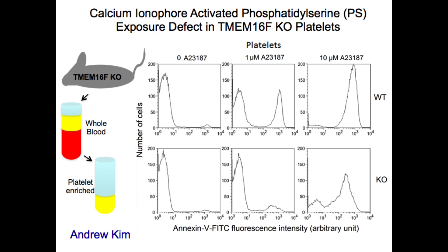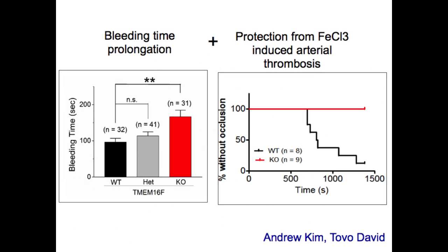We recently generated a TMEM16F knockout mouse, which mirrored many of the phenotypes associated with Scott syndrome patients. Platelets collected from knockout mice displayed attenuated PS exposure in response to elevated internal calcium compared to wild-type mice. The knockout mice also showed longer bleeding time compared to wild-type mice, again reflecting the human bleeding disorder. Furthermore, when we challenged them with ferric chloride to induce arterial thrombosis, the knockout mice were protected from blood vessel blockage.